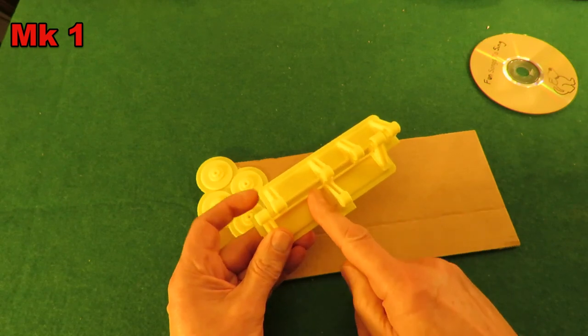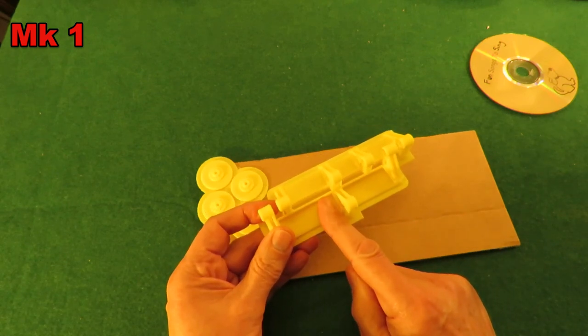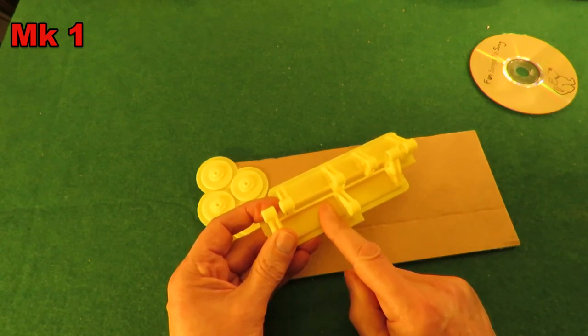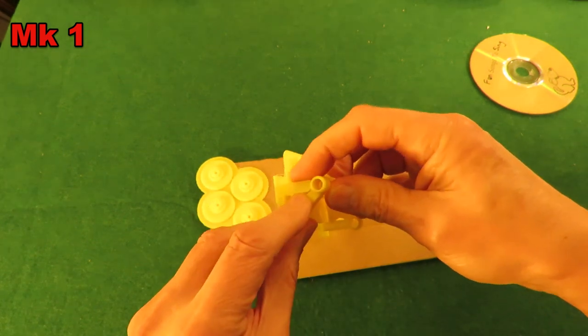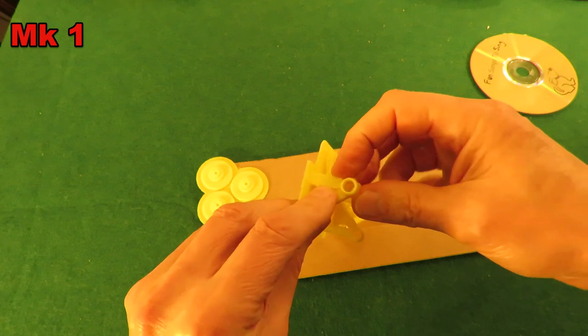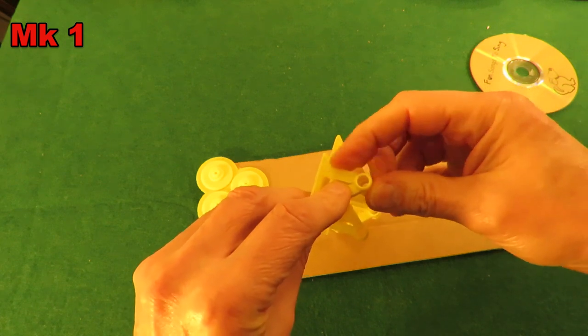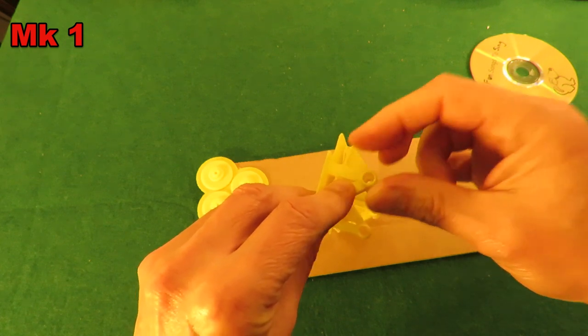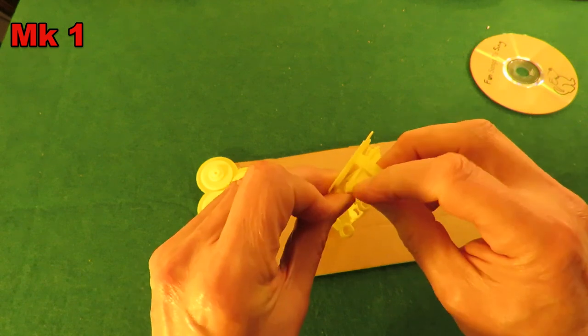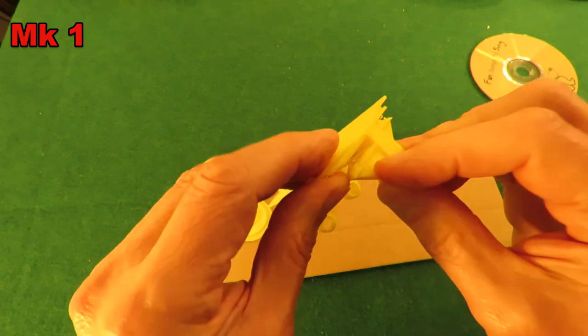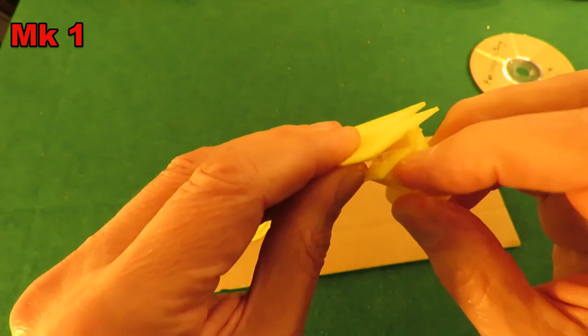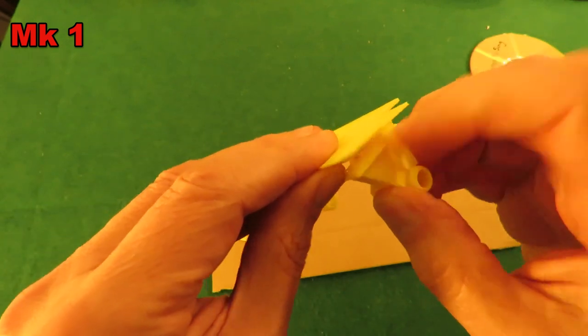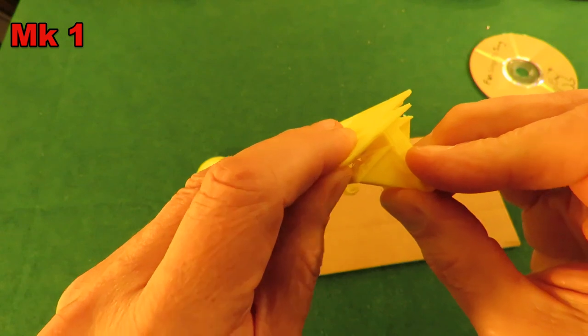But I've made a few basic novice errors with this. If we look here we've got quite an overhang and the software has automatically built a support for it. I thought it would do that for these bits but it didn't. So in there the PLA has actually dropped down and we've got a right mess under there.